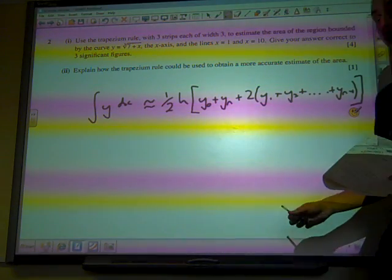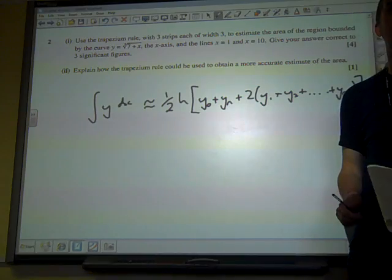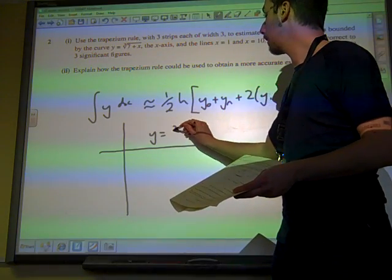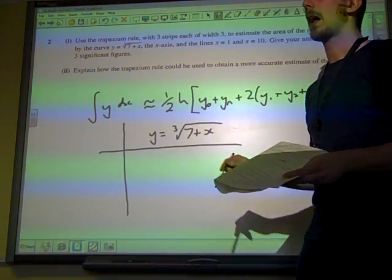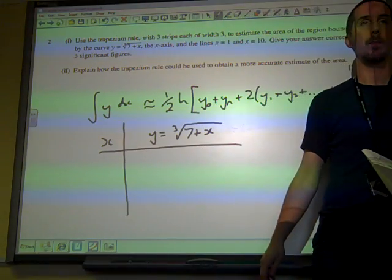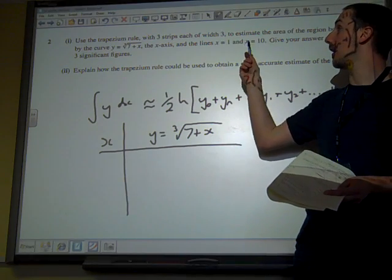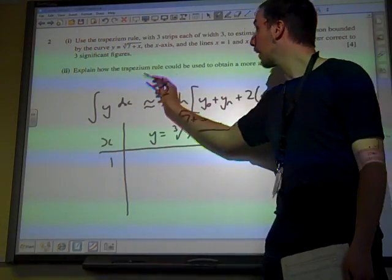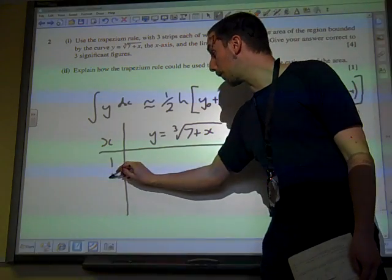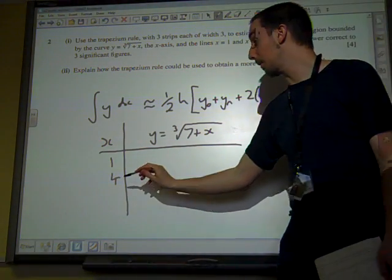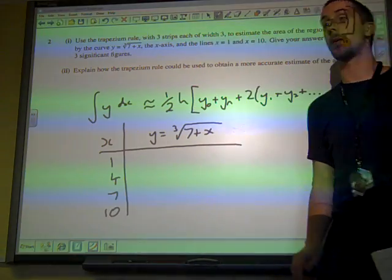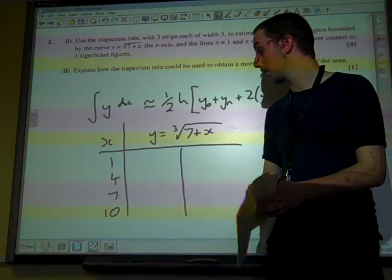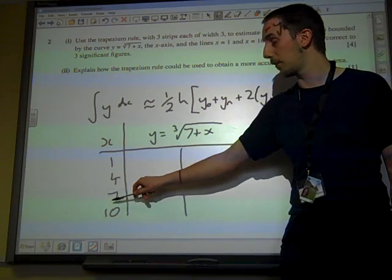When I do these, although I might not with this one because there's so little going on, I draw up a little table where I'm going to put my function up here and my x values down this column. Now my x values are supposed to go from 1 to 10 and it tells me how wide the strips are. So I'm going to start at 1, strips of width 3, so my next value is 4, then 7, then 10. Three strips means we need four ordinates because there's a gap between every two ordinates.